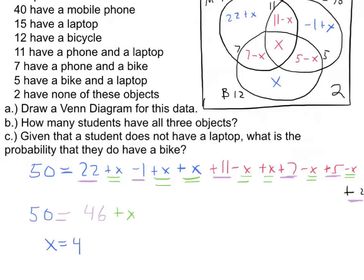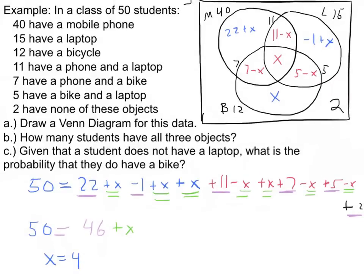Now that we have X equals 4, we can complete the Venn diagram. The center section is 4. The phone-laptop section is 7, the phone-bike section is 3, the bike-laptop section is 1, the phone-only crescent is 26, the bike-only section is 4, and the laptop-only section is 3. With numbers everywhere, answering the remaining questions is straightforward.